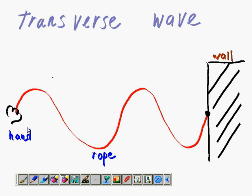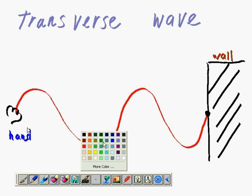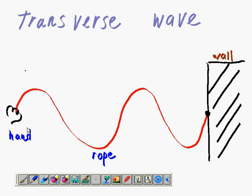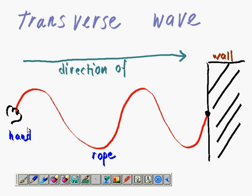Transverse Wave, let's say I have this set up again. The hand is holding the red rope, and the direction of the Wave is from left to right. So, when I move my hand up and down, this pattern is created.